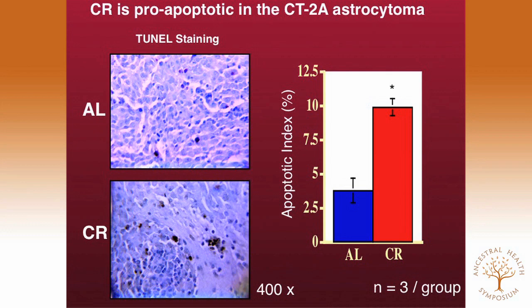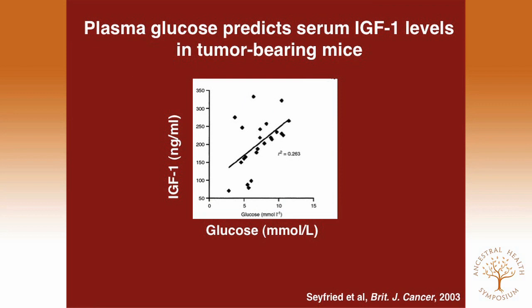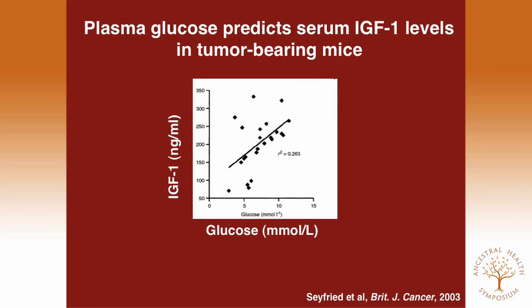We've done linear regression analysis asking what are the drivers. As glucose levels go down, ketones go up — this is an evolutionarily conserved adaptation. As glucose goes down, tumor weight goes down and the size of tumors shrinks. We've also seen a correlation between glucose and IGF-1 (insulin-like growth factor 1), which is a driver of tumor angiogenesis. As glucose goes down, IGF-1 goes down, and corresponding signaling cascades go down. We've also shown how calorie restriction targets NF-kappa B, knocking down phosphorylated NF-kappa B through Cox mechanisms, shutting down the entire inflammatory system driving cancer progression.